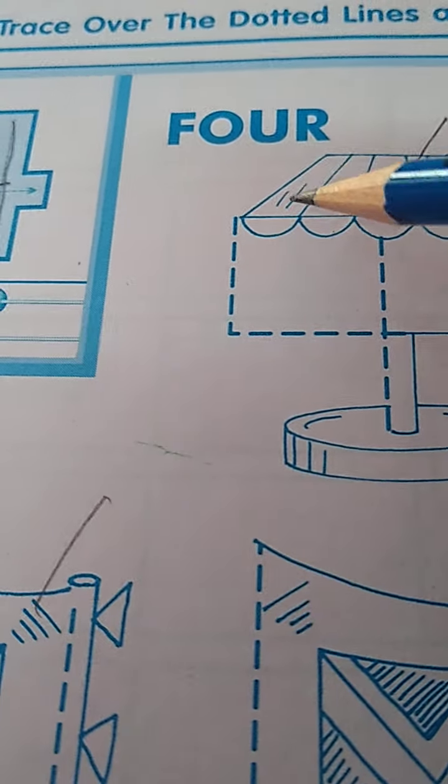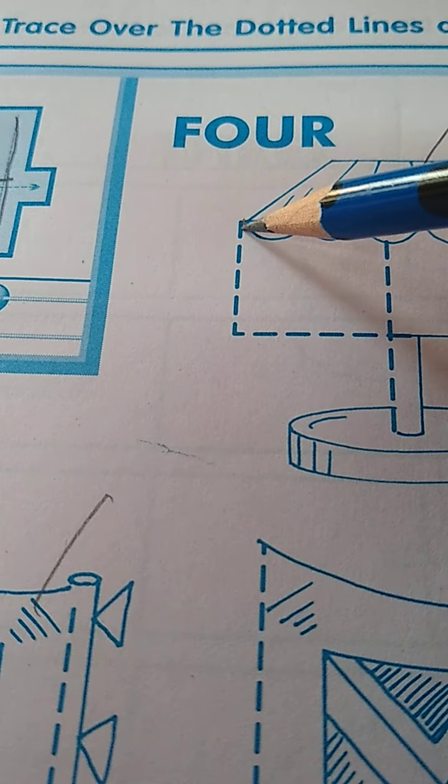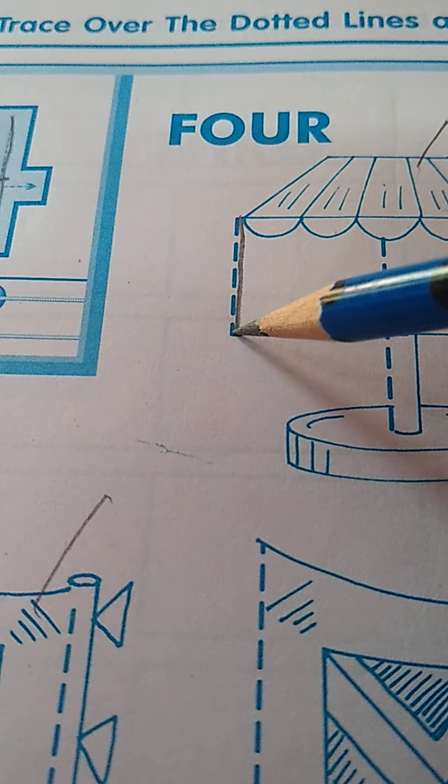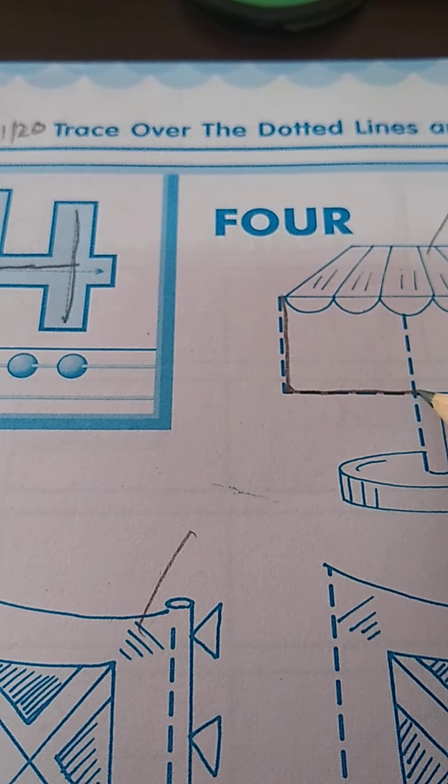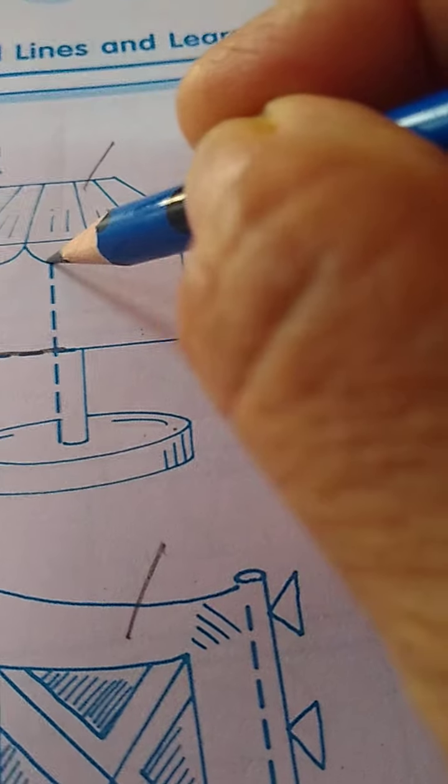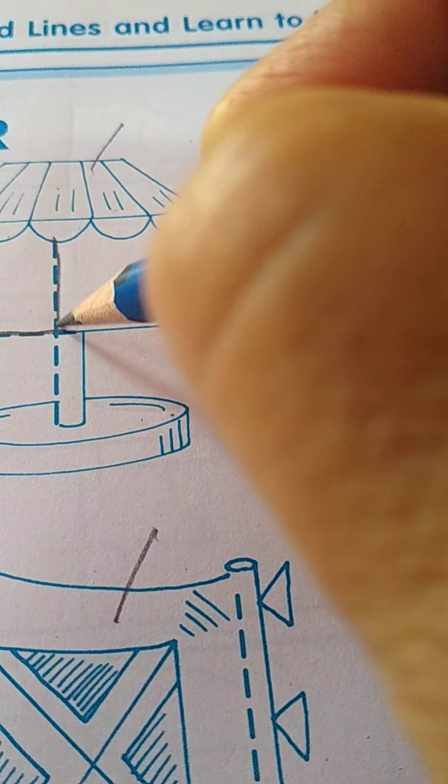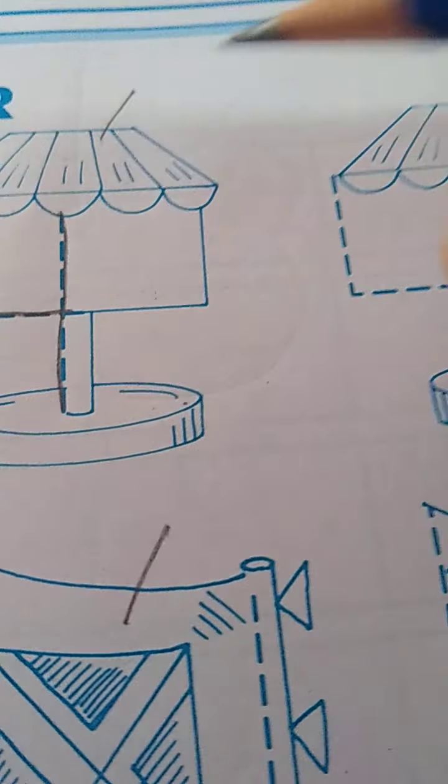Please draw on the dots. Standing line, then sleeping line, then again standing line. This is 4.